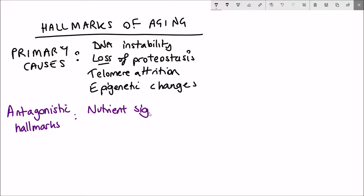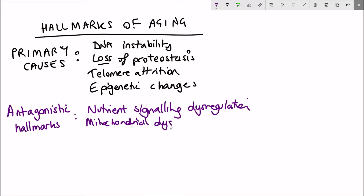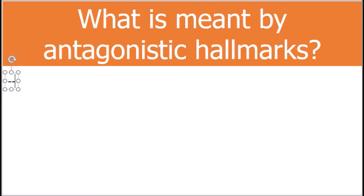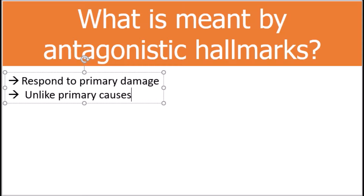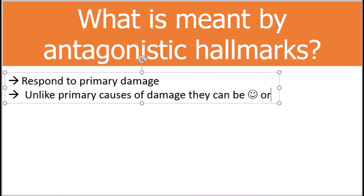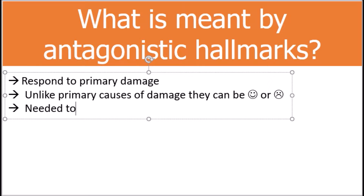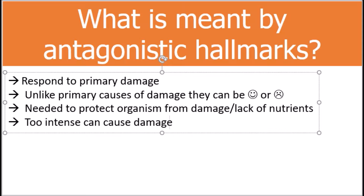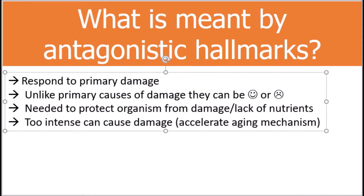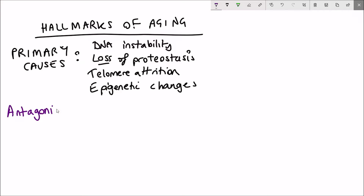In this video we'll look at the antagonistic hallmarks — but what does that even mean? In the context of ageing, whilst the primary causes are the primary causes of damage, the antagonistic hallmarks are responding to that damage. Whilst the primary causes are bad, the antagonistic hallmarks can be positive or negative depending on the context or how intense the response is. These hallmarks are there to protect the organism, however when their response is too intense that's when it can promote ageing.